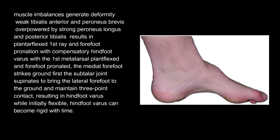Muscle imbalances generate the deformity: weak tibialis anterior and peroneus brevis are overpowered by a strong peroneus longus and posterior tibialis, resulting in a plantarflexed first ray and forefoot pronation with compensatory hindfoot varus. With the first metatarsal plantarflexed and forefoot pronated, the medial forefoot strikes the ground first, and the subtalar joint supinates to bring the lateral forefoot to the ground.